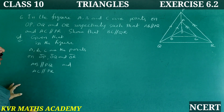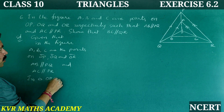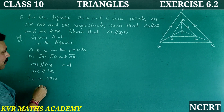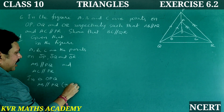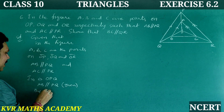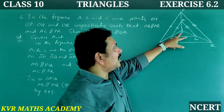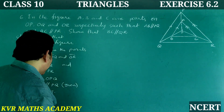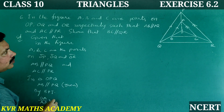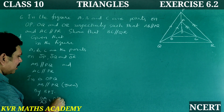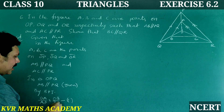Solution: In triangle OPQ, AB is parallel to PQ as given. So by the Basic Proportionality Theorem, OA by AP is equal to OB by BQ. This is equation one.